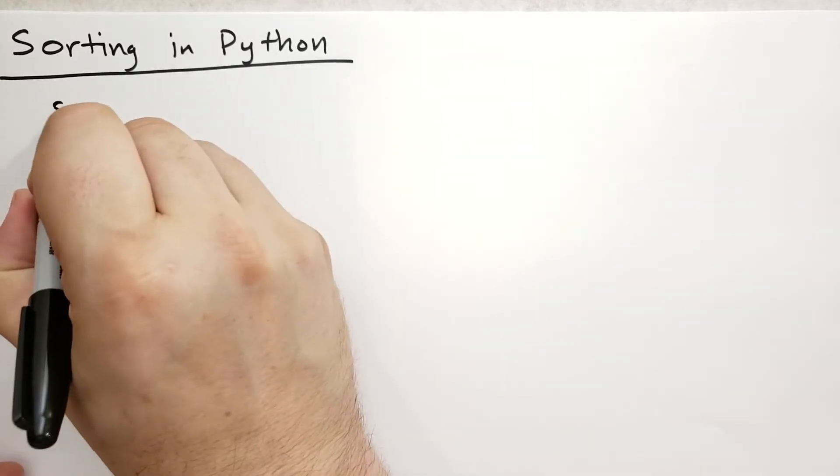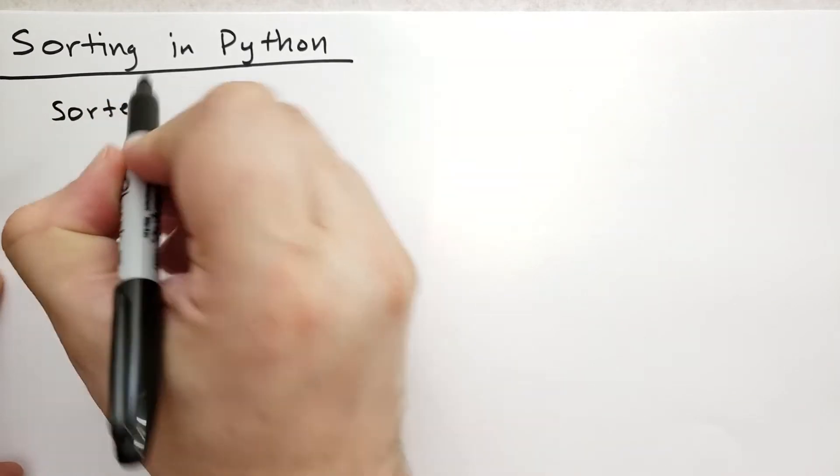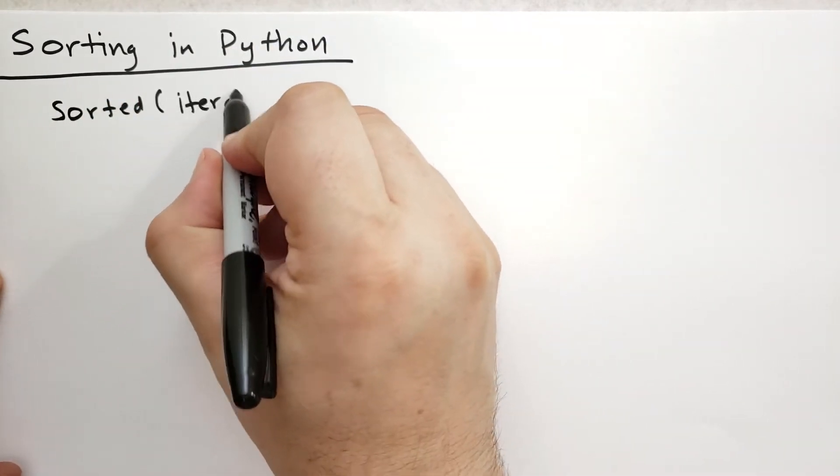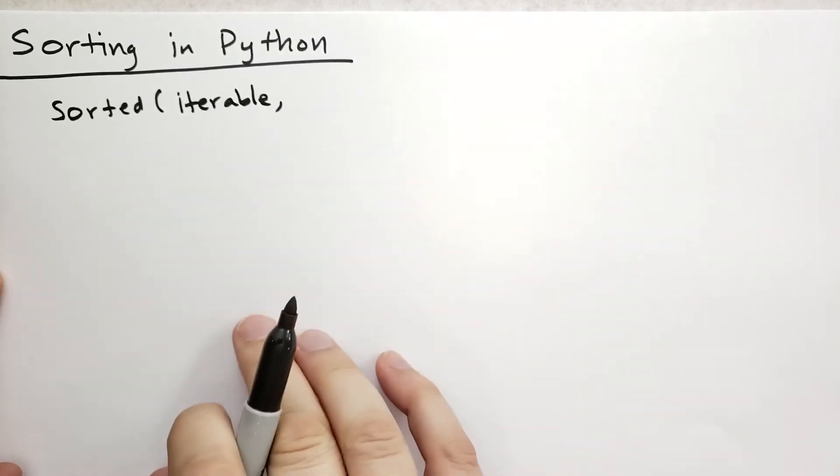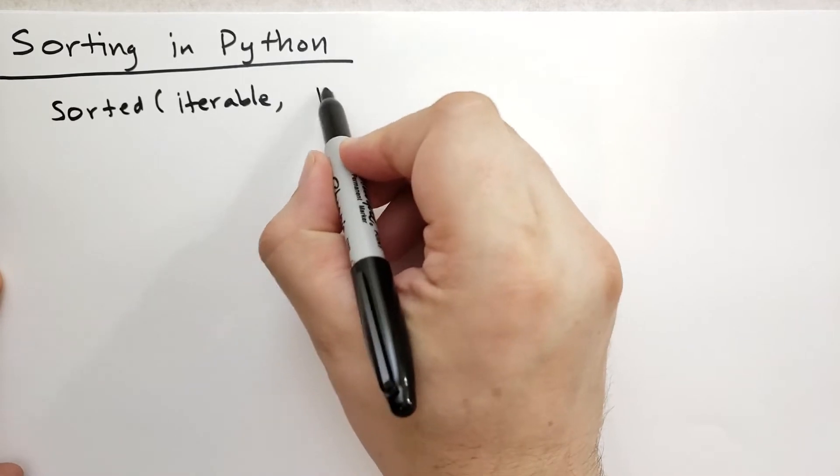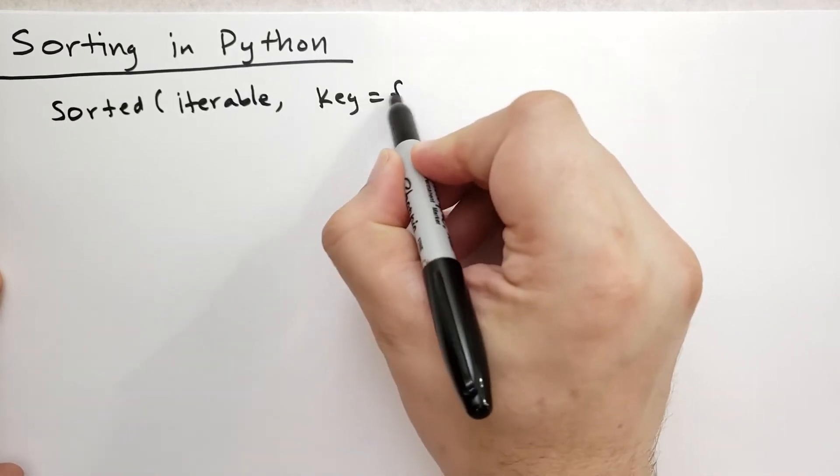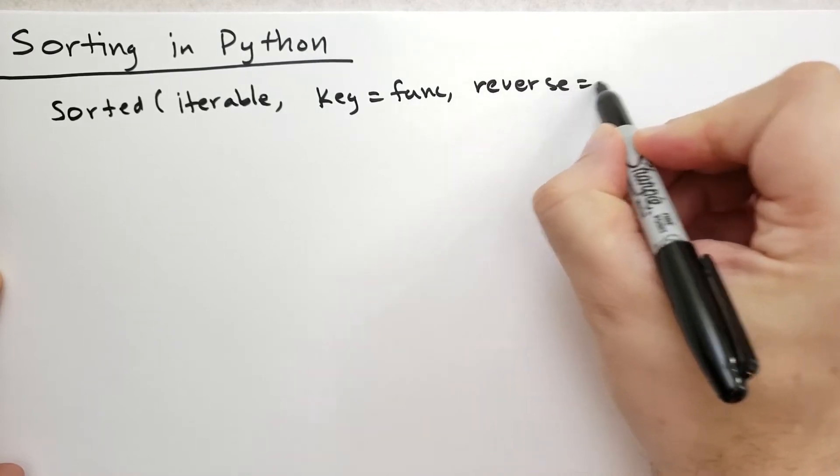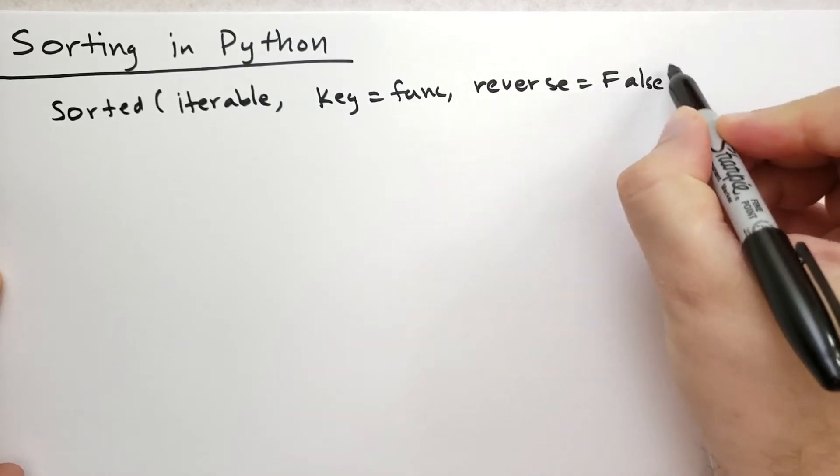First let's cover the sorted function that's built in. Sorted takes an iterable - this could be a list, a tuple, a generator, any kind of iterable. You can have an optional key parameter which is some function, and you could specify whether you want it in reverse order with a boolean that defaults to false.